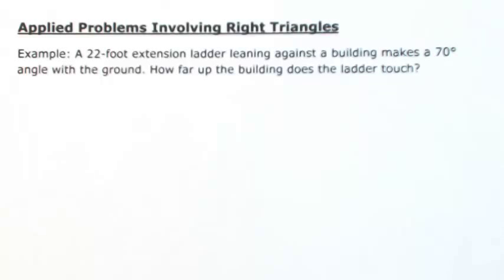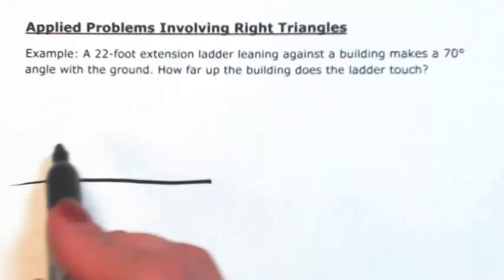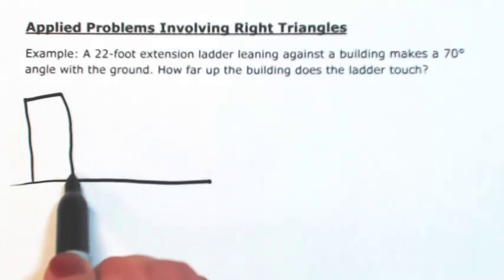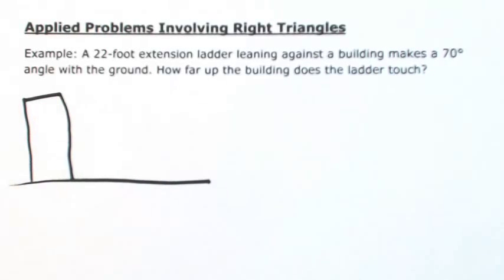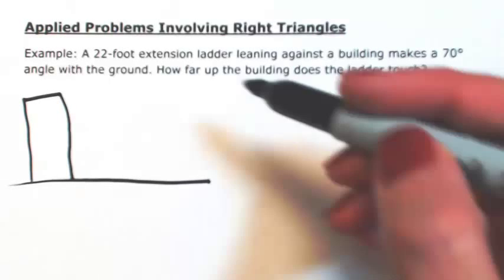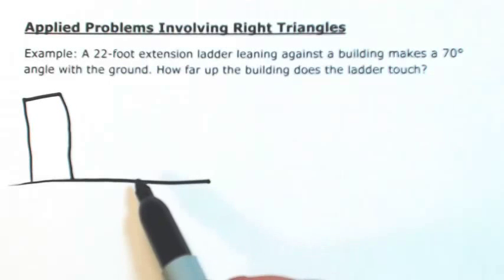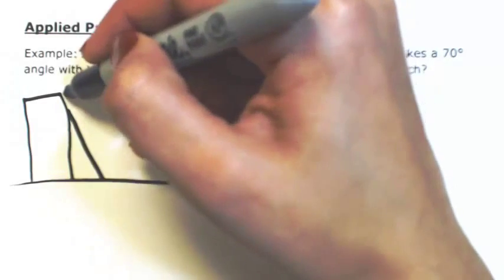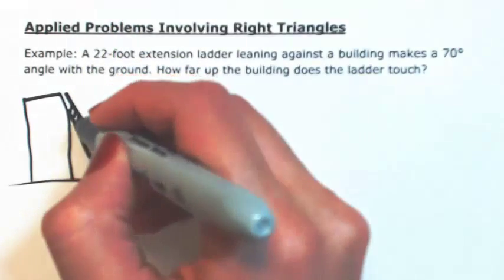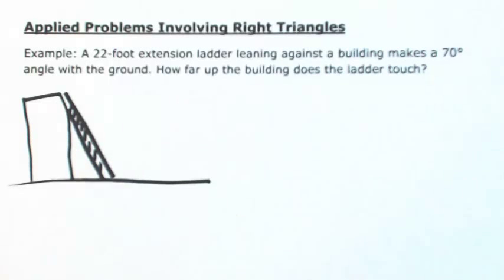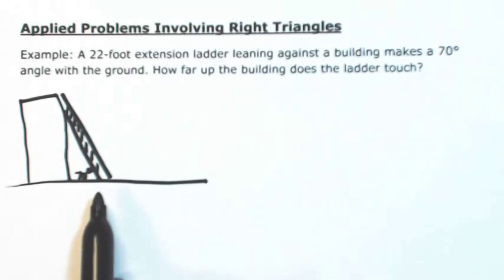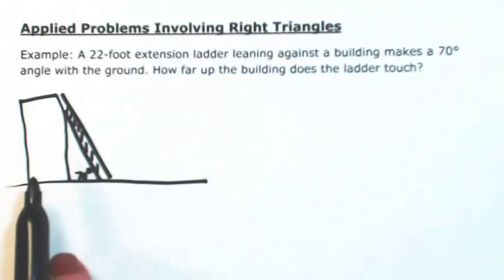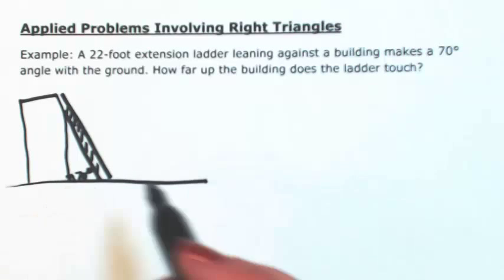I always like to draw a picture so I know what we're talking about. So let's say here's the ground. We have our building. So we have a 22-foot extension ladder that's leaning against the building, making a 70-degree angle with the ground. So it's leaning up pretty steeply. 70 degrees. So assuming that the ground and the building are perpendicular, this would be a right triangle.